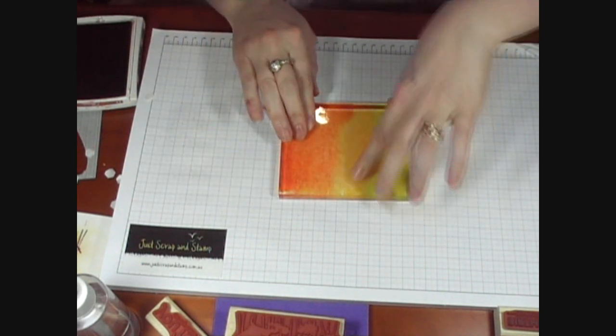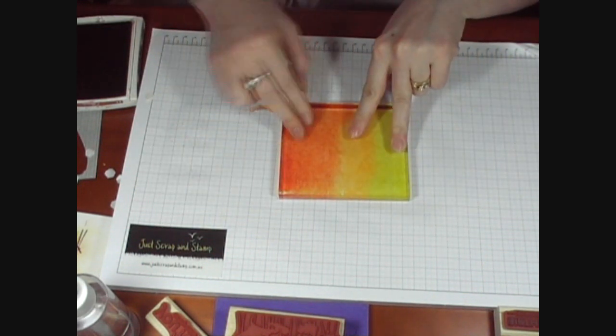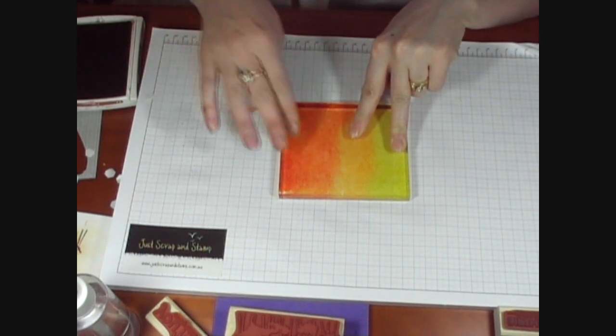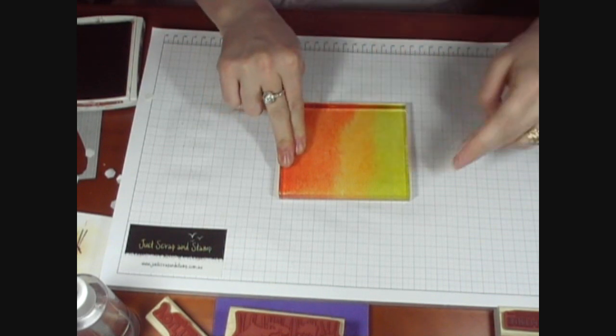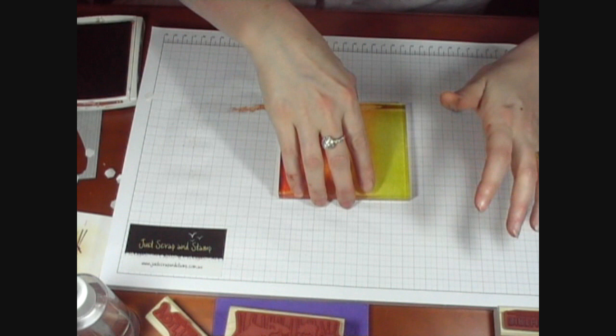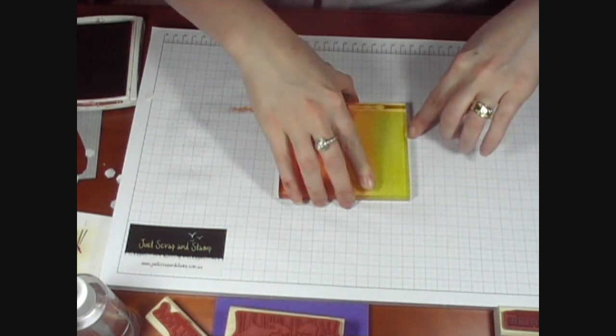You'll see when you lay the watercolor paper on, the block onto the paper, that the ink spreads out across the paper. If you haven't got enough water on it, the ink won't spread under the block. And then just carefully lift the block off.